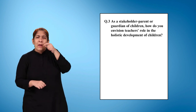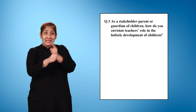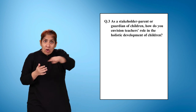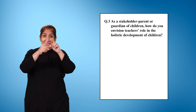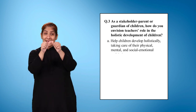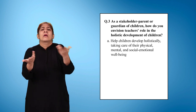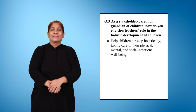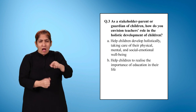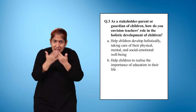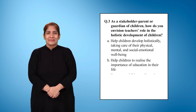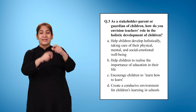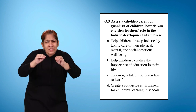Question 3: As a stakeholder, parent or guardian of children, how do you envision teachers' role in the holistic development of children? Select one or more options. Option A: Help children develop holistically, taking care of their physical, mental and social-emotional well-being. Option B: Help children to realize the importance of education in their life. Option C: Encourage children to learn how to learn. Option D: Create a conducive environment for children's learning in schools.